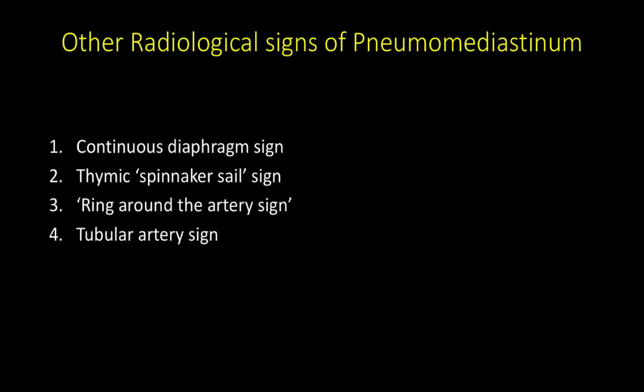There are other radiological signs of pneumomediastinum: the continuous diaphragm sign, the thymic spinnaker sail sign or angel's wing sign, the ring around the artery sign, and the tubular artery sign. There are other signs which are much rarer to see on the chest x-ray.